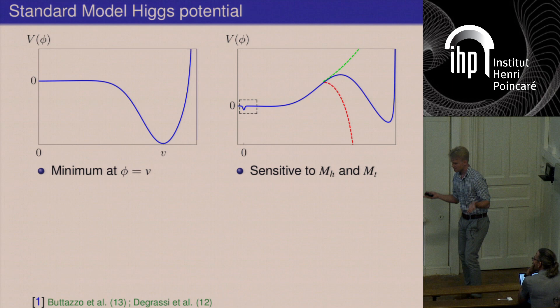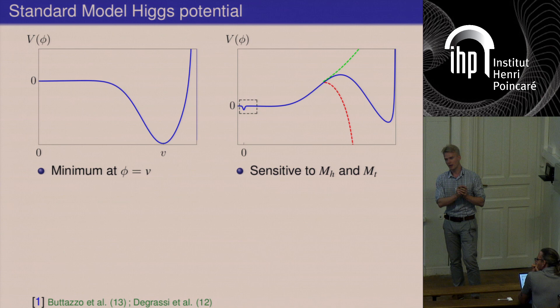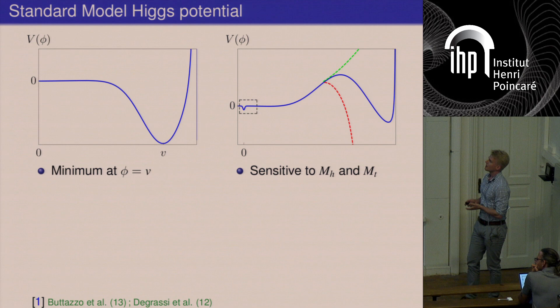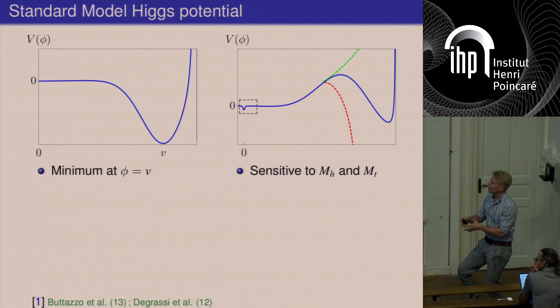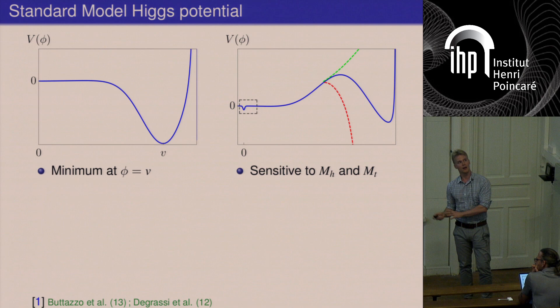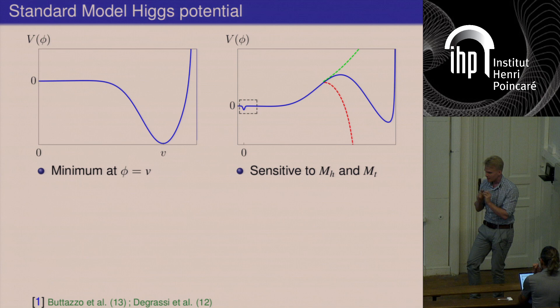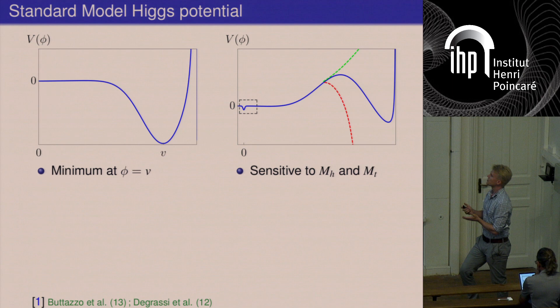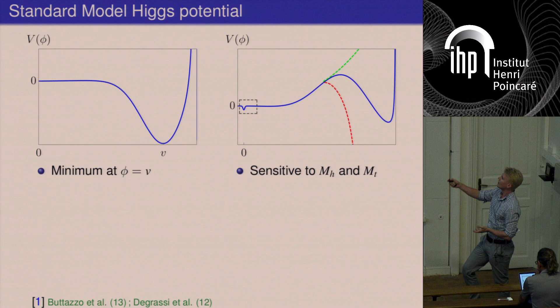It is also extremely interesting to study how the potential, now taken to include quantum corrections, behaves at extremely large field values. For some values of the experimental inputs — mostly the top quark mass and the Higgs mass — you find that another minimum emerges at very large field values. This happens at an extremely large scale, and the precise behavior of the potential is very sensitive to the inputs from colliders. You can find solutions where there is almost immediately a second minimum, or where the electroweak minimum is in some sense the true vacuum of the system.